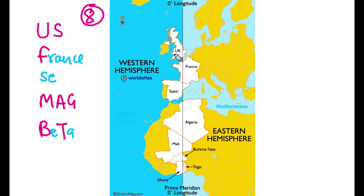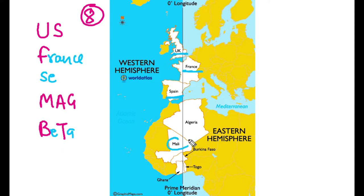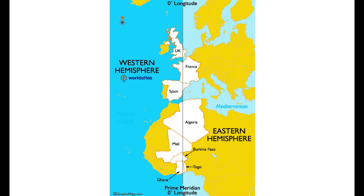We'll have to remember these by focusing on the pink letters. U for UK, S for Spain, F for France, M for Mali, A for Algeria, G for Ghana, B for Burkina Faso, and T for Togo.